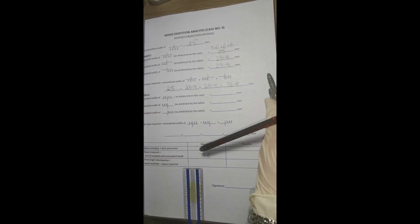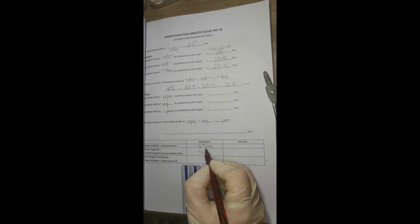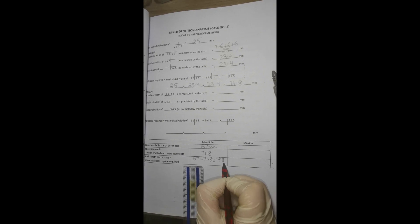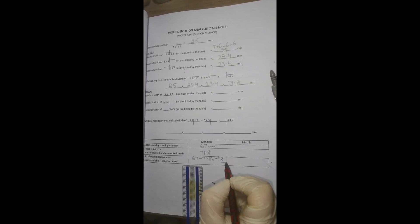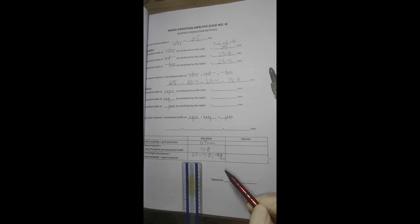Add these segments and you will get your space available which is 67 mm. Write it here. Arch length discrepancy of this cast is 67 minus 71.8 which is equal to minus 4.8 mm. For this cast, it's minus 4.8 mm crowding in mandibular arch.